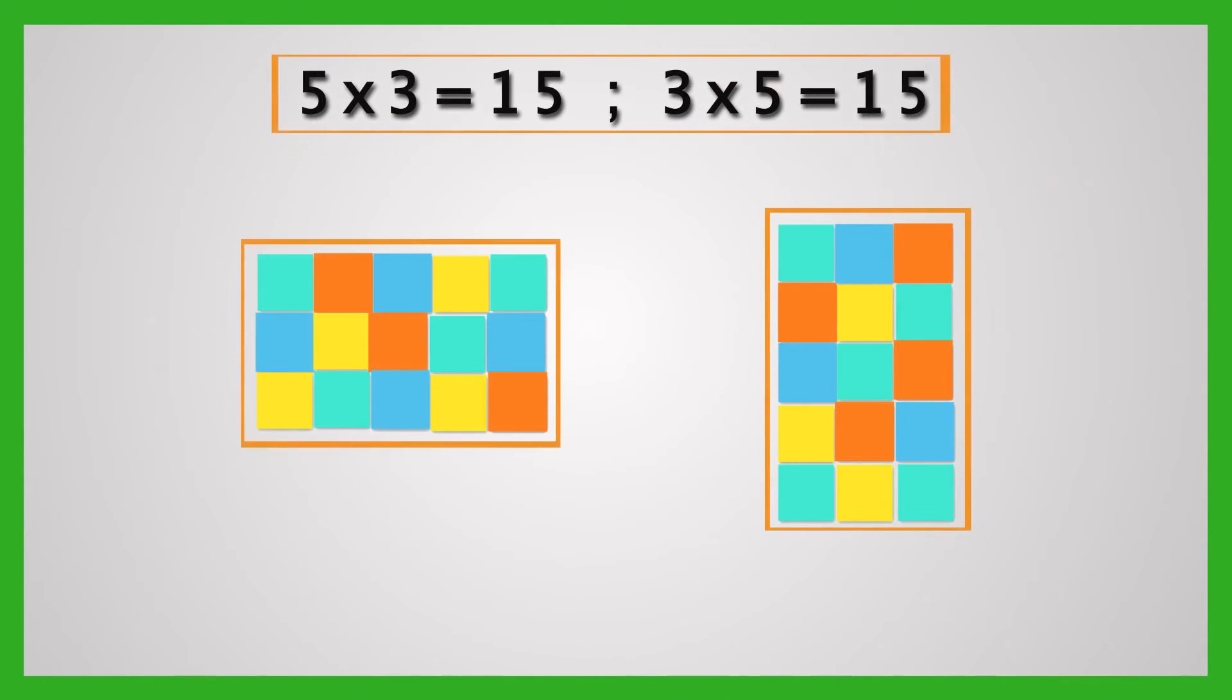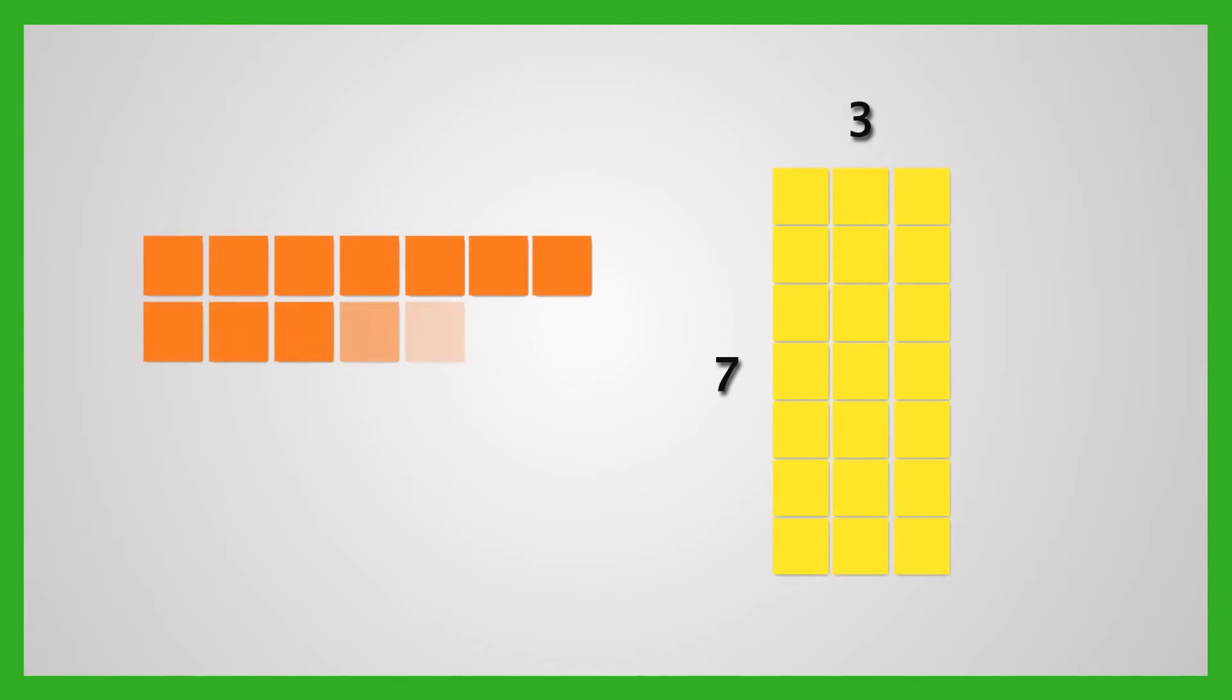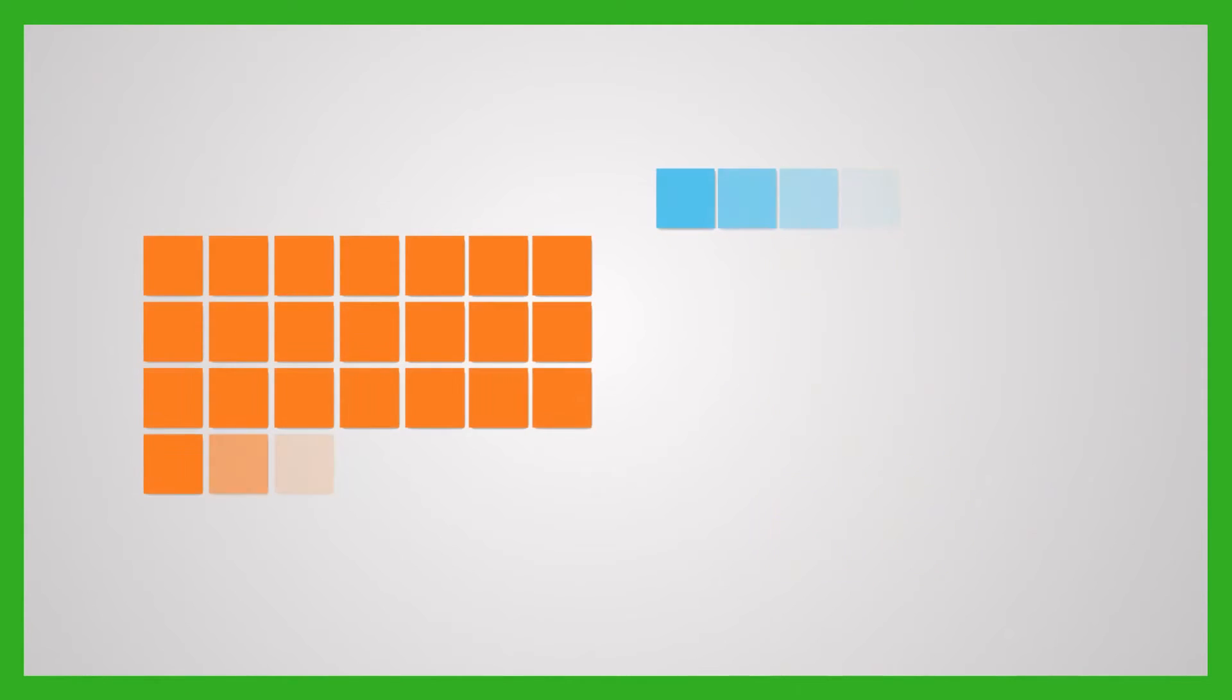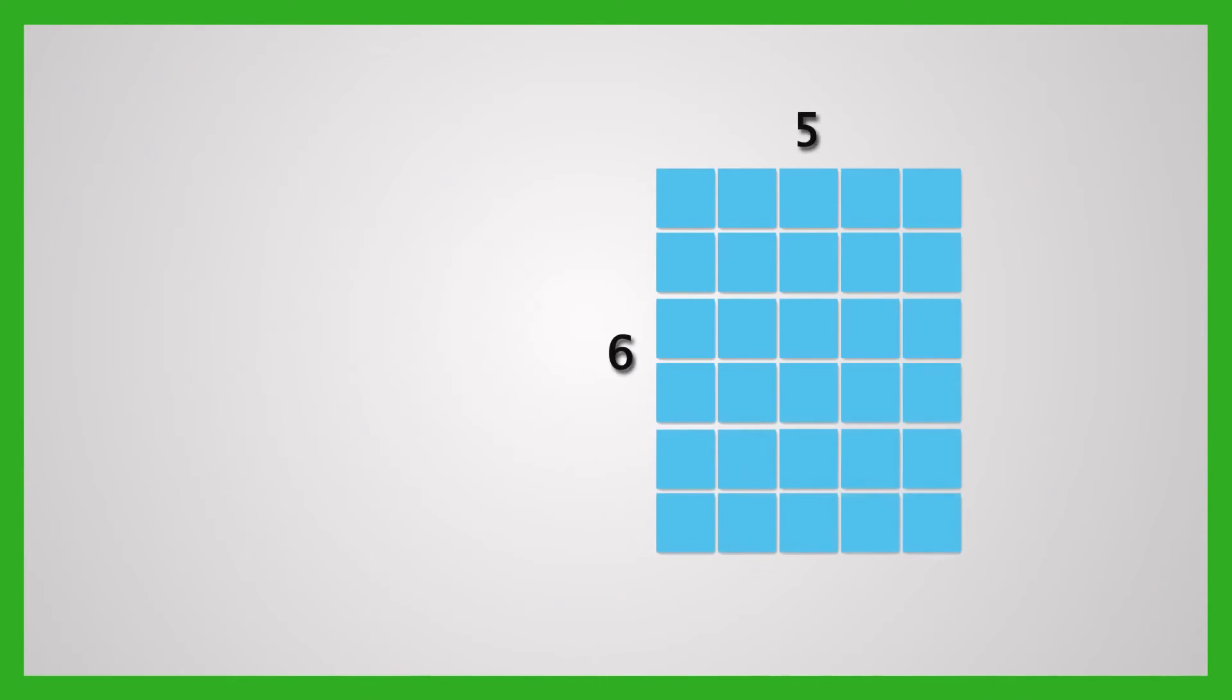3 multiplied by 5 is 5 rows with 3 in each row. Again, the product is 15, also a rectangle. So when we multiply, the product is a rectangle. The size of the rectangle depends on the value of the multiplicand and the multiplier. This concept will be helpful to students later when doing geometry.